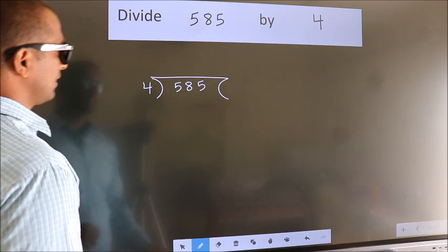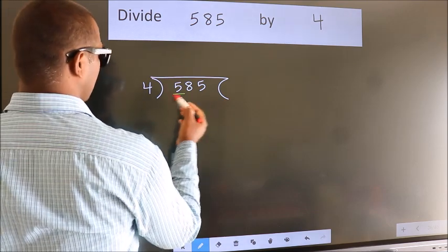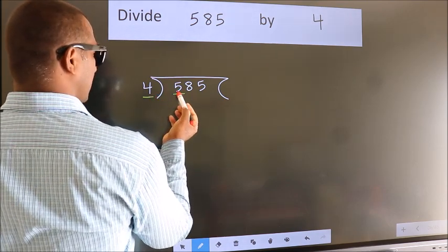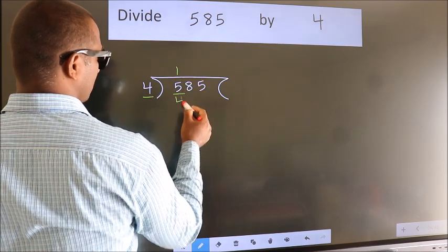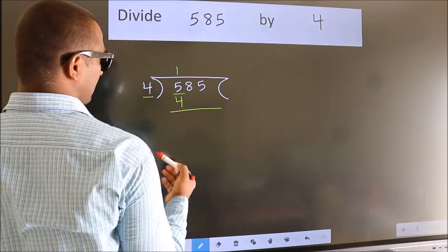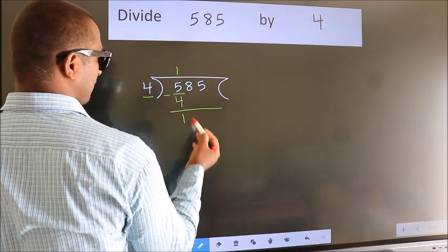Next, here we have 5, here 4. A number close to 5 in the 4 table is 4 once 4. Now we subtract and get 1.